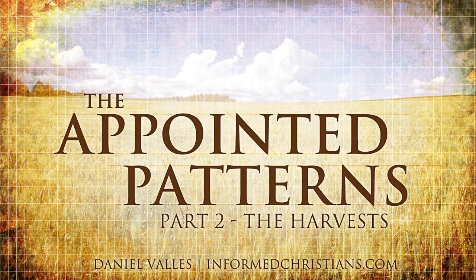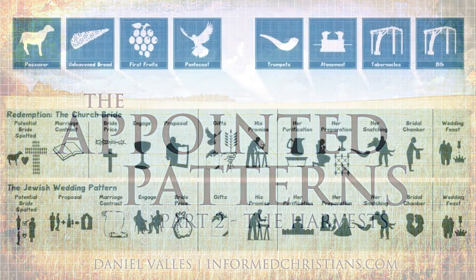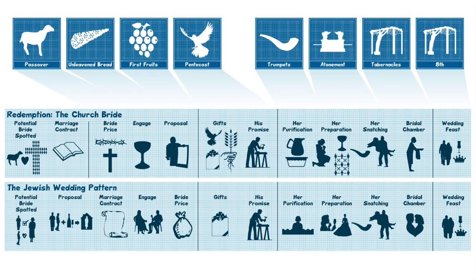The Appointed Patterns Part 2: The Harvests. My name is Daniel Vallis from informedchristians.com, a website ministry devoted to discerning current events from a Christian and Biblical perspective. In Part 1 we reviewed different patterns of the feasts and how they point toward the Jewish wedding pattern and the work of redemption that Christ is doing. The feasts are patterns and shadows of the larger picture. Throughout scripture there are many pictures and illustrations used to picture the work that Christ is doing, different responsibilities, and even what Christians are.